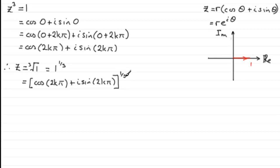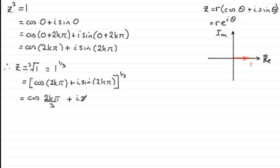By De Moivre's theorem, we bring this power down and multiply it with the argument. So what we get is cos(2kπ/3) + i·sin(2kπ/3).